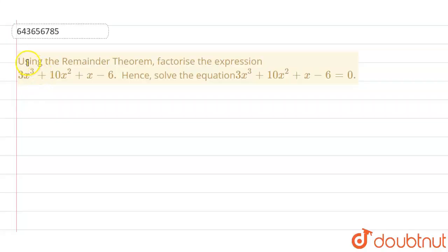Hello everyone, let's discuss this question. The question says using the remainder theorem, you have to apply the remainder theorem here. Factorize the expression 3x cube plus 10x square plus x minus 6 and solve the equation 3x cube plus 10x square plus x minus 6 equal to 0.